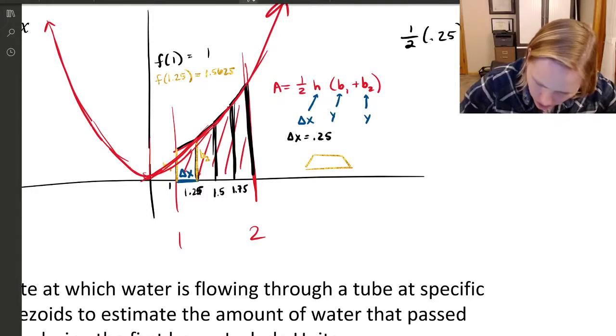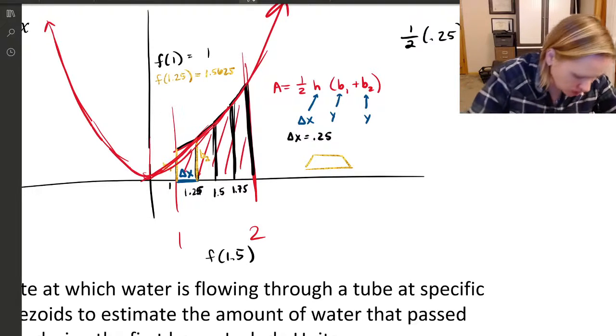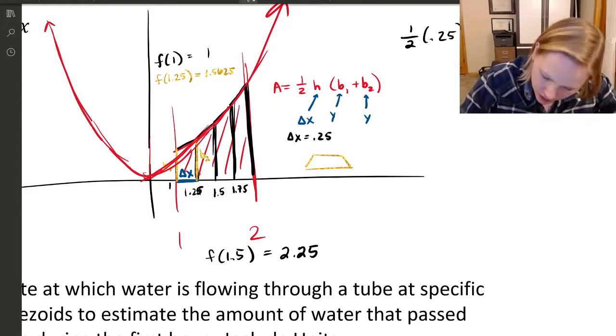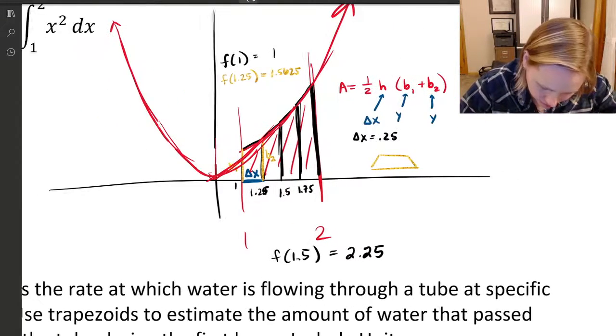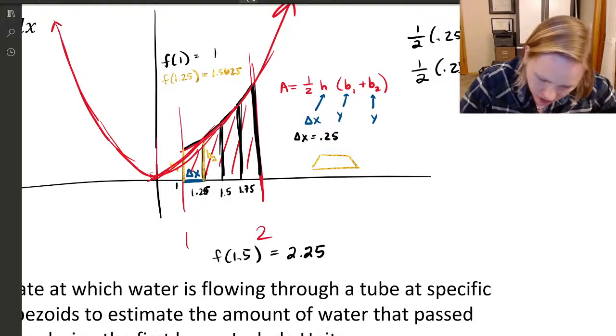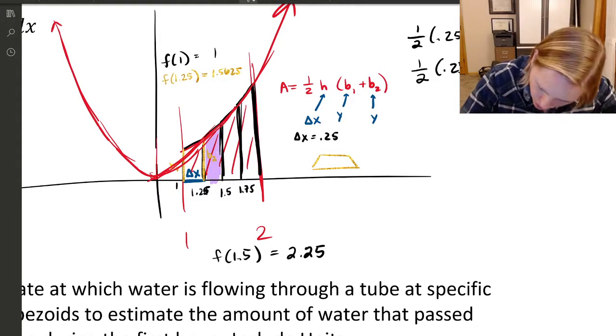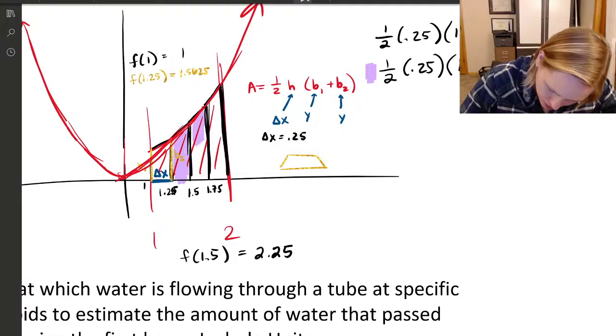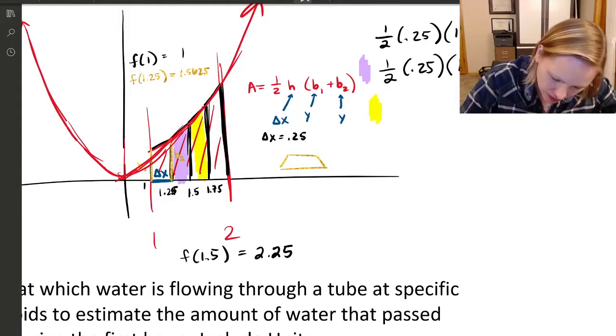The next trapezoid, we would have to know f of 1.5. Well, 1.5 squared is 2.25. So we do one half times the width is still 0.25. And then the b1 for the next trapezoid here is the previous b2. So it's still that 1.5625 plus 2.25. So this is my purple trapezoid.